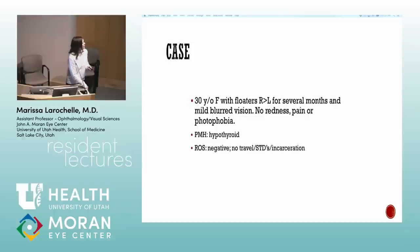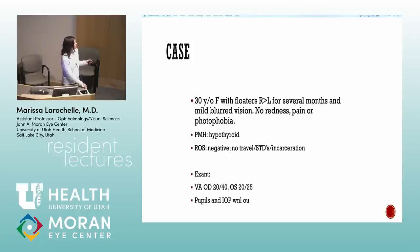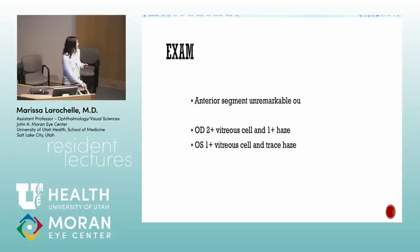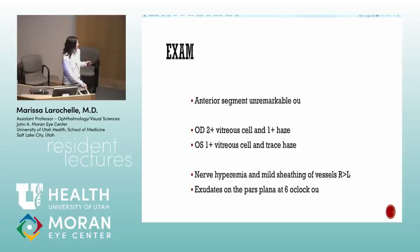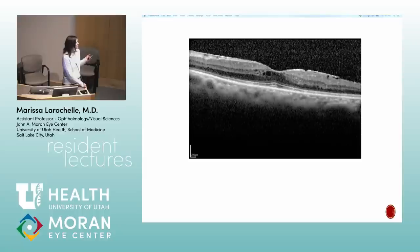Intermediate uveitis: floaters, non-painful, any age but often young otherwise healthy adults. Findings include vitreous cells, nerve swelling, vascular sheathing, exudates, and CME — but this is not pan-uveitis. Differential: number one idiopathic, number two sarcoid, number three MS. Then infectious causes — a thorough history and checking for chorioretinal lesions is what pushes toward infectious etiology.